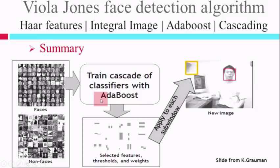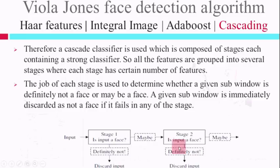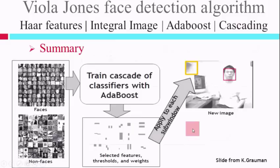To summarize: we have faces and non-faces, and we train a cascade of classifiers with AdaBoost. We now have stages that are cascaded, and in each stage, classifiers are selected using AdaBoost. Each selected classifier has a threshold, a weight, and everything is determined by AdaBoost. After cascading is complete, we apply a 24x24 window that passes all over the image, and in this way, a face is detected in an image.